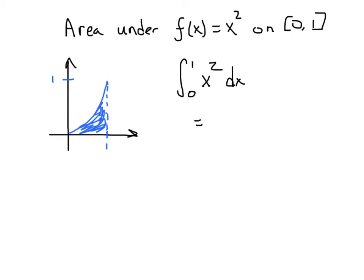The way the fundamental theorem works is we figure out the antiderivative, any antiderivative, without the plus c. Because when we subtract, the c's cancel anyway. So this antiderivative is going to be one-third x cubed. You may also see it as x cubed over 3.